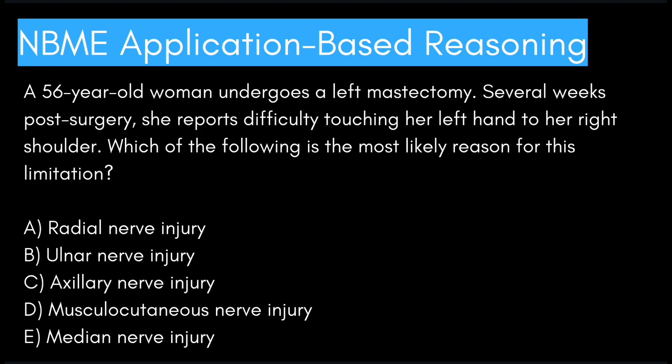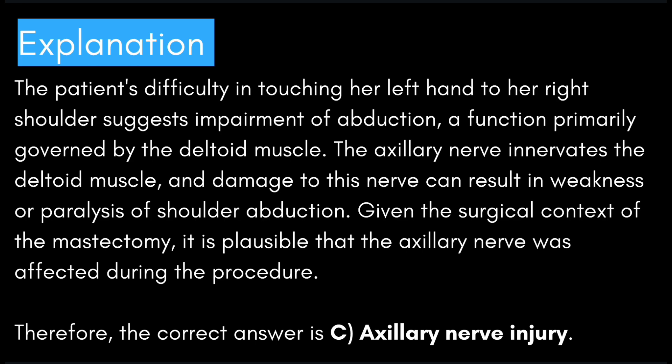The patient's difficulty in touching her left hand to her right shoulder suggests impairment of abduction, a function primarily governed by the deltoid muscle. The axillary nerve innervates the deltoid muscle, and damage to this nerve can result in weakness or paralysis of shoulder abduction. Given the surgical context of the mastectomy, it is possible the axillary nerve was affected. Therefore, the correct answer is C: axillary nerve injury.